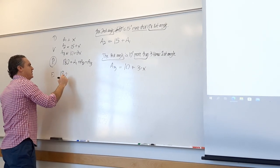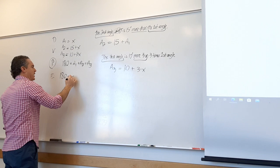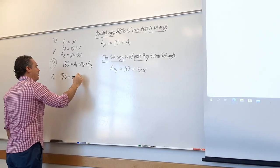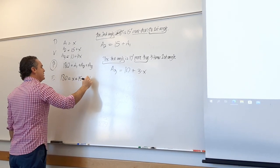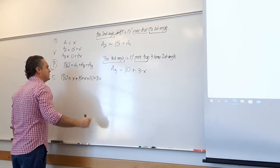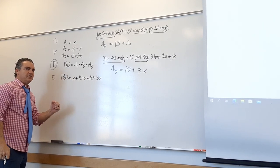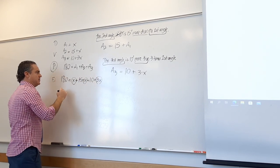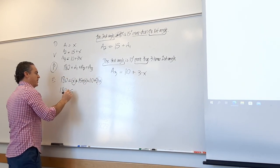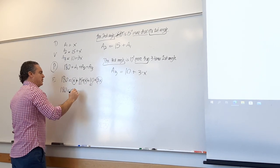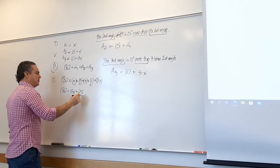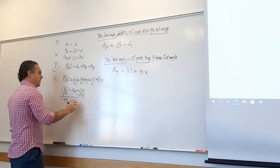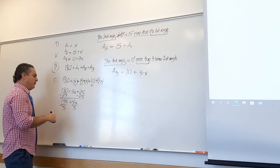Moving on. This is the pattern: we're going to build your word problem type and then do an example. We're going to the next page — consecutive integer. What does the word consecutive mean? In a row, one after the other, in order.